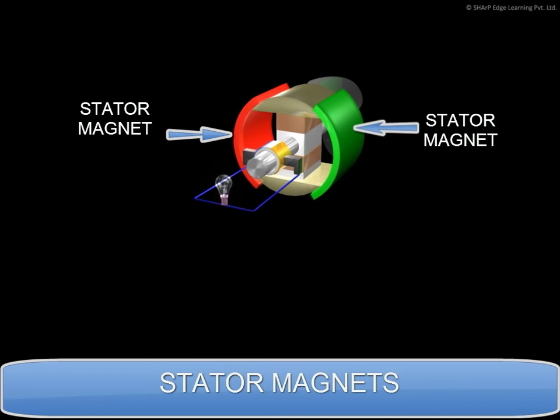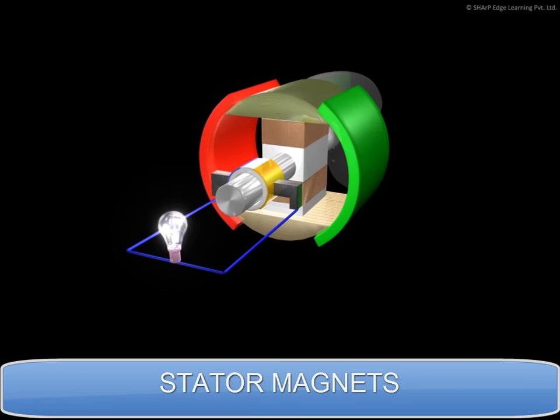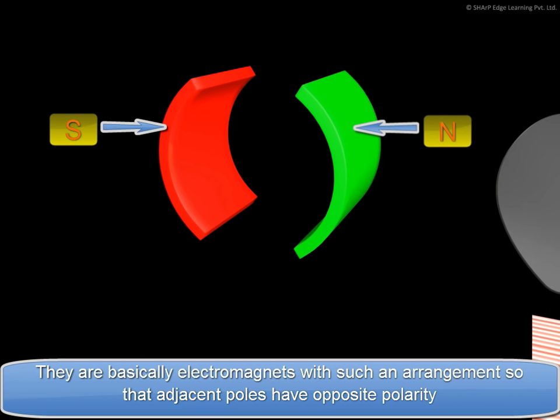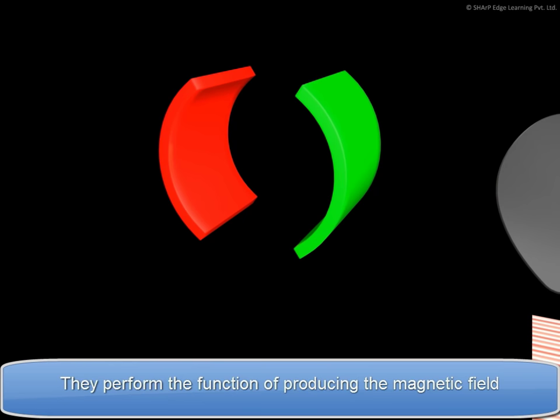Stator Magnets. They are basically electromagnets with such an arrangement so that adjacent poles have opposite polarity. They perform the function of producing the magnetic field.